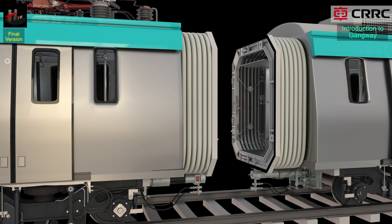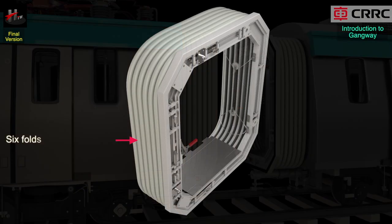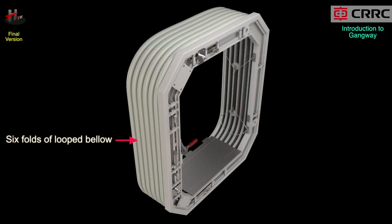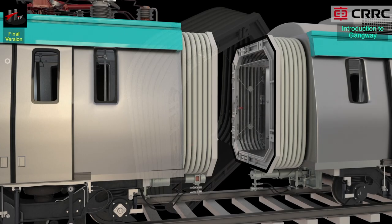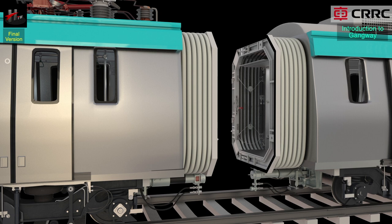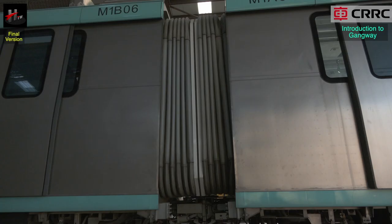Each half bellow assembly consists of six folds of looped bellow. The bellows are made of special artificial leather with characteristics of good fire retardant performance, high strength and aging resistant property. The stitching edge of each bellow is clamped with an aluminium bellow frame. One end of the bellow is clamped into the end frame by aluminium connect clip and the other end is clamped into the coupling frame.